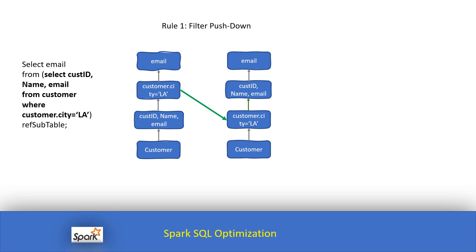Before we understand filter pushdown, we have highlighted one query. Under this query, we are selecting customer ID, name, and email from a customer table. The condition is that for a specific city in the USA — city LA — we want to find out the customer ID, name, and email.